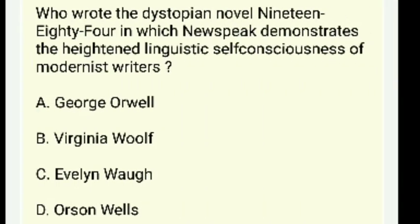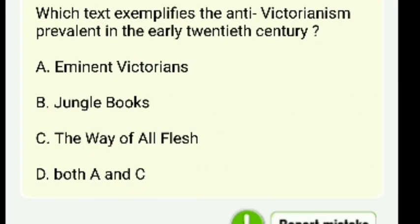Who wrote the dystopian novel 1984? Your answer is George Orwell. Which text exemplifies the anti-Victorianism prevalent in the early 20th century — Eminent Victorians, Jungle Book, The Way of All Flesh, or both A and C? The answer is both A and C.